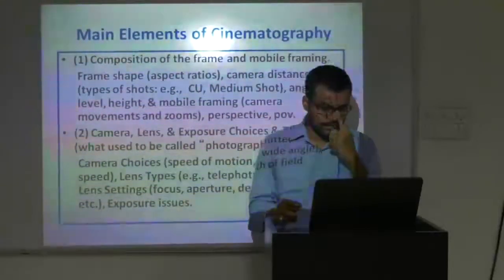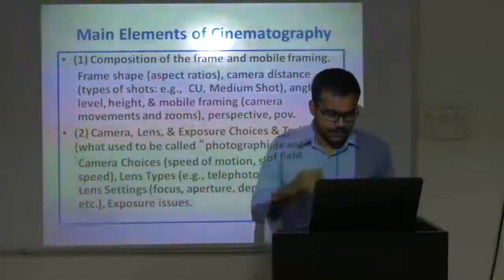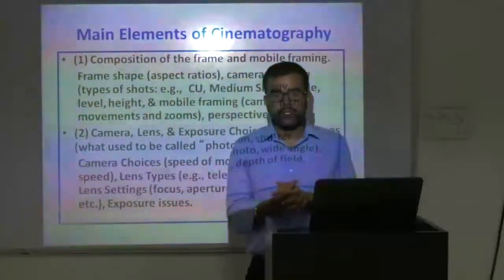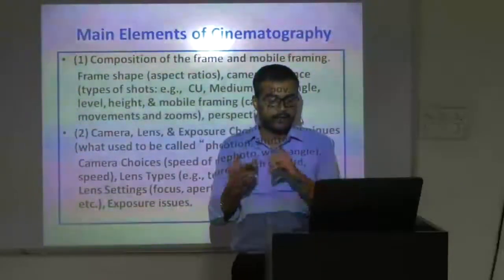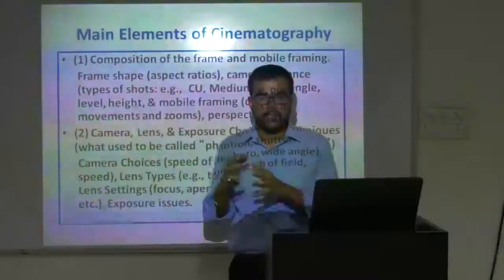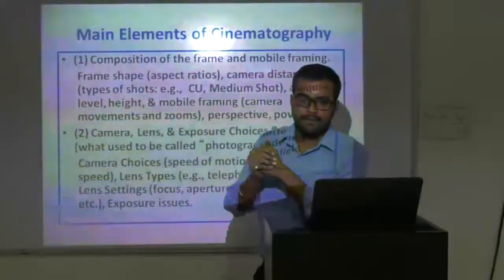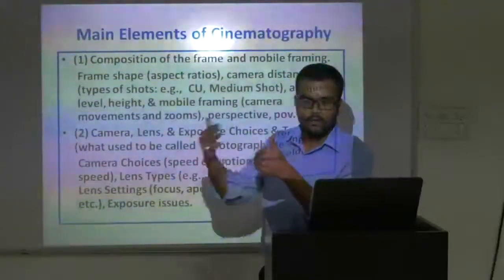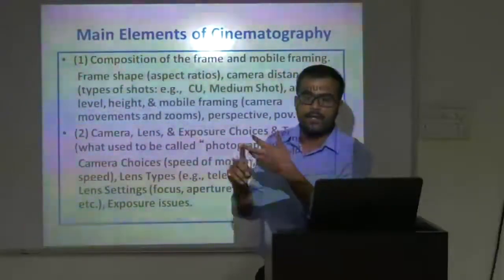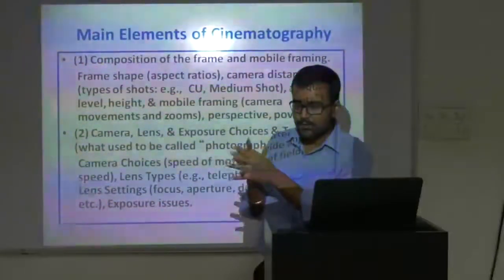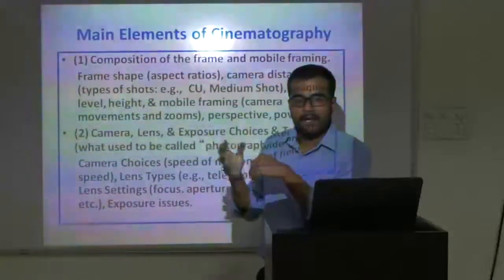Suppose we are students in a class — that's why we create this environment. Lens types can be telephoto, wide-angle, and then we have lens settings which are focus, aperture, depth of field, and then we have exposure issues. So if we talk about focus, anything that's sharp in the frame is called sharp focus, and focus can shift from foreground to background. Then we have aperture, which controls the amount of light that enters through the lens, which gives us depth of field that can be shallow or a great depth of field. So if we talk about great depth of field, that is when we have everything from foreground to background sharp in focus, which requires a higher aperture number.